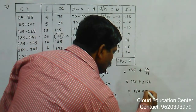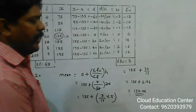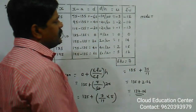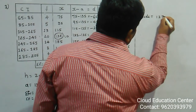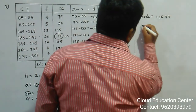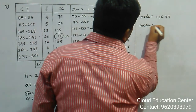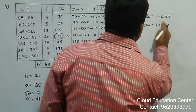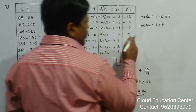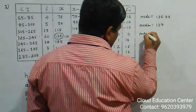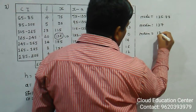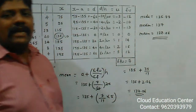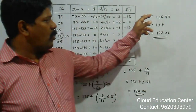So we got all three measures of central tendency: Mode = 135.77, Median = 137, and Mean = 137.06. These are your answers.